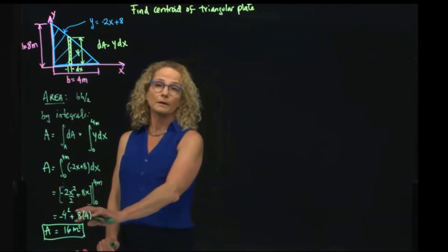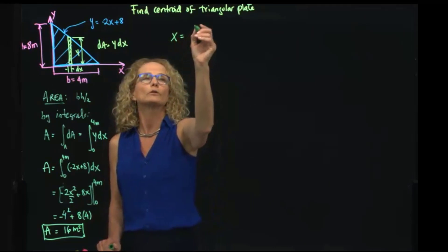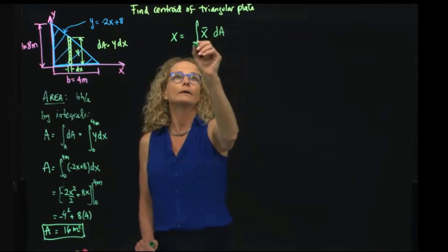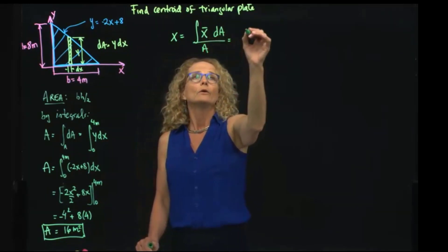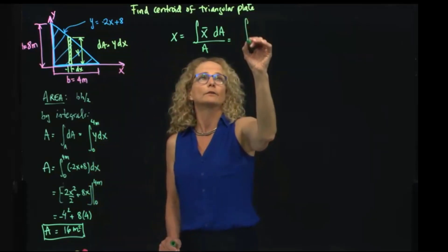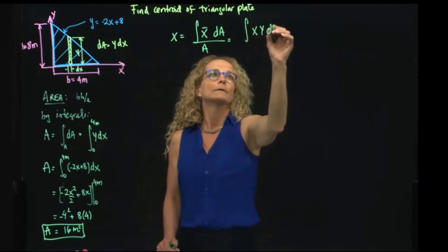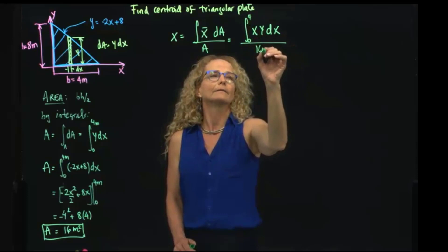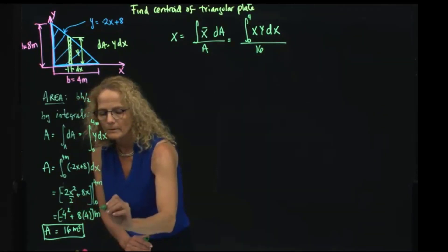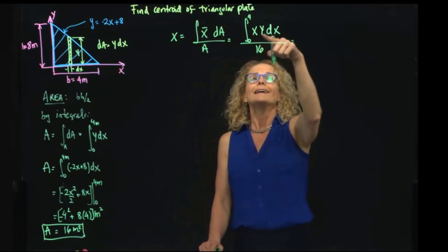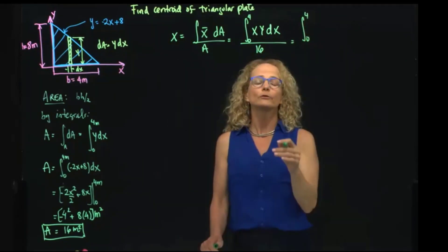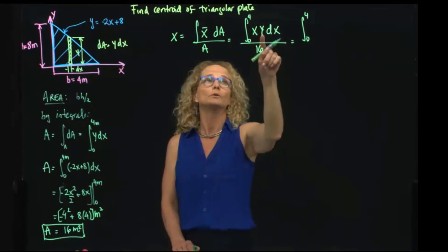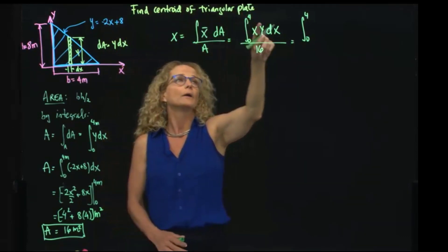Now that I have the area, the definition of centroid, you know that is the centroid of that differential of area times the area divided by the total area. I already said that I'm going to write the differential of area like that. My limits of integration will be from 0 to 4 divided by 16.